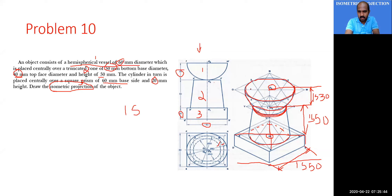At O3, draw the isometric projection of the top surface of the hemisphere. Using O3 as center, the radius is the original radius equal to 30 mm to draw the hemisphere's isometric projection.